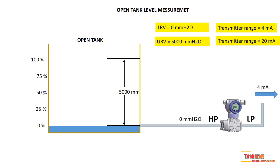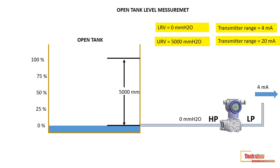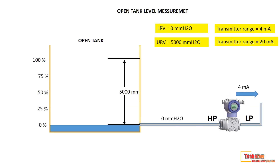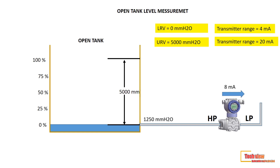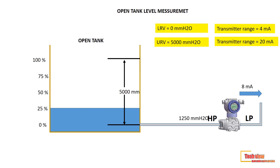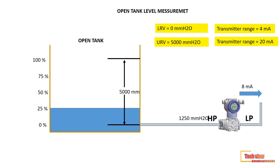After configuring the transmitter, let's see how it reads and transmits to the DCS or PLC. The transmitter signal is 4 to 20 milliamps — low value converts to 4 mA and full span converts to 20 mA. When the tank is empty, there is no pressure (0 mmH₂O), so the transmitter sends 4 mA to the DCS. When the level rises to 25% of the tank, pressure rises to 1250 mmH₂O, and the transmitter converts this to 8 mA and sends it to the DCS.